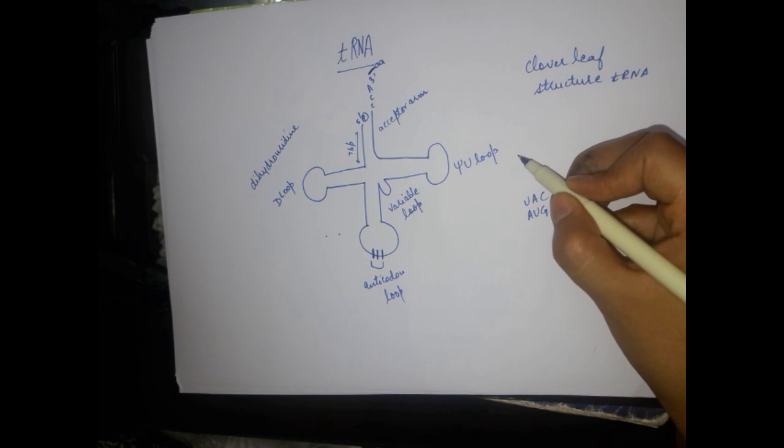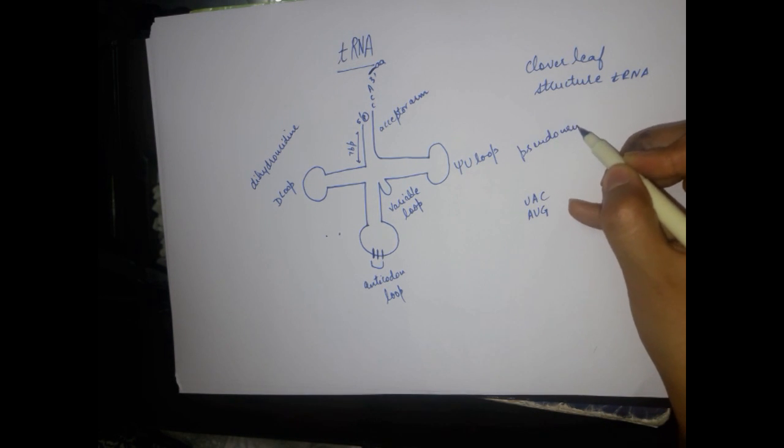The pseudouridine loop contains pseudouridine as an unusual base along with normal bases. The three prime arm is the site where the amino acid is attached, and from here it gets incorporated into the growing polypeptide during translation. If the tRNA carries an amino acid it is called a charged tRNA; if it does not carry an amino acid it is called an uncharged tRNA.